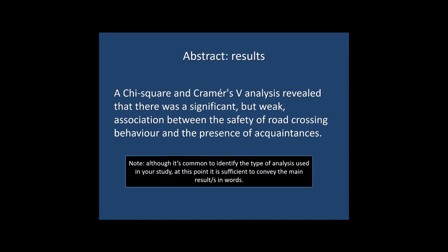So let's have a look at the results part of your abstract now. This is a straightforward part because all you really have to do is briefly summarize the main finding or findings of your study in words. It's okay to indicate what kind of analysis was used, but you don't have to formally report the statistics here. Just point out what the main finding or findings were, and try to keep things as concise as possible.